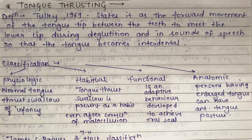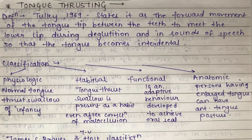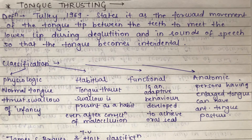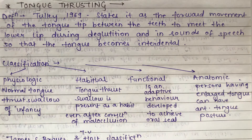The topic is tongue thrusting from oral habits. Tongue thrusting is a common name for an oral myofunctional disorder — it is a dysfunctional muscle pattern in which the tongue protrudes anteriorly or laterally during swallowing, during speech, and while the tongue is at rest.